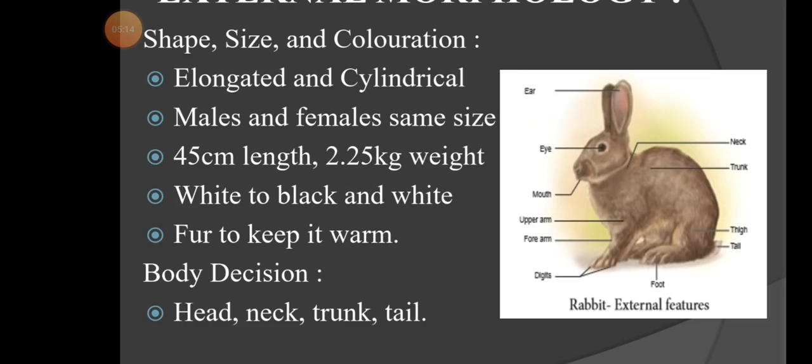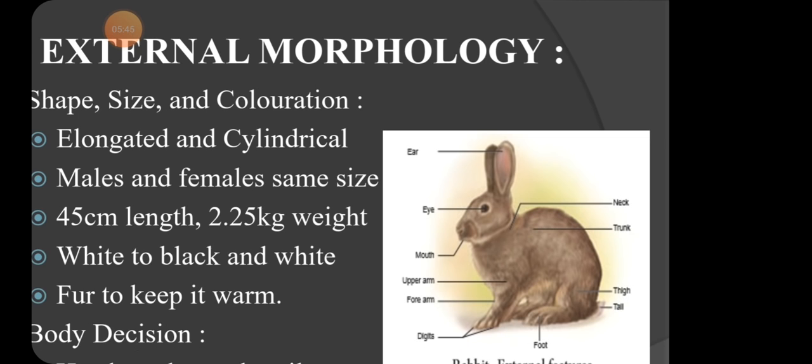Surrounding the animal is fur — dense hair-like structures. Fur is present to keep the body warm. The body is divided into head, neck, trunk, and tail, which we will see one by one.